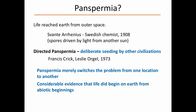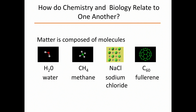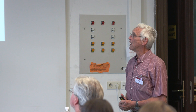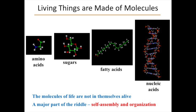In any case, there's considerable evidence that life did begin on Earth from abiotic beginnings. How do chemistry and biology relate to one another? Stuff is made of molecules — water, methane, sodium chloride, fullerene — 60 carbons in a football. Living things are also made of molecules, but different molecules: amino acids, sugars, fatty acids, nucleic acids. But of course, the molecules of life are not in themselves alive. The riddle is not whether the molecules are alive, but how the organization of these molecules — the self-assembly of them — leads to the properties that we classify as life.